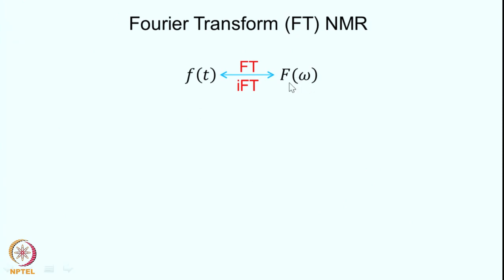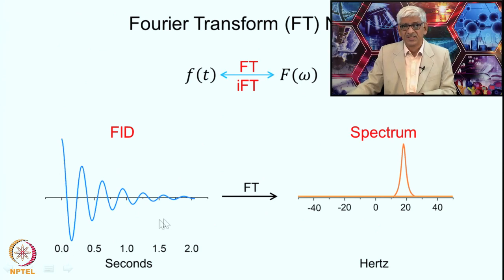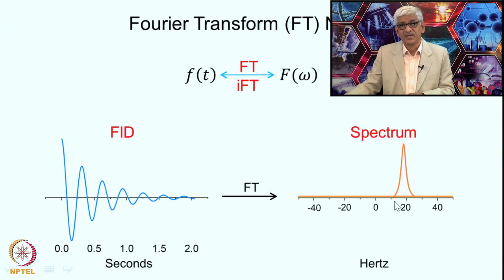The functions f(t) and F(ω) are a Fourier pair. A Fourier transformation of the FID gives the frequency-domain spectrum; the inverse Fourier transform goes back from frequency domain to time domain. The FID is a superposition of various frequencies each multiplied by e^(−t/T2). Fourier transforming a single-frequency FID gives one peak; two frequencies give two peaks.